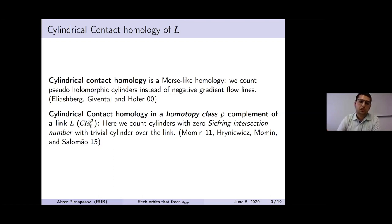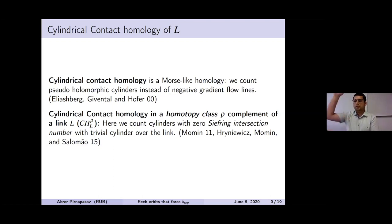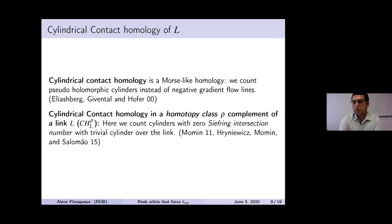More precisely, cylindrical contact homology in a homotopy class in the complement of the link counts cylinders with zero algebraic intersection number with the trivial cylinder over the link. This was first introduced by Al-Momin, then improved by Hryniewicz, Momin, and Salomão.